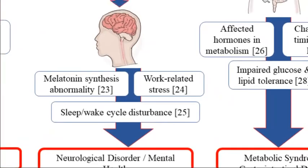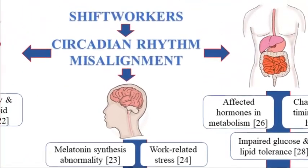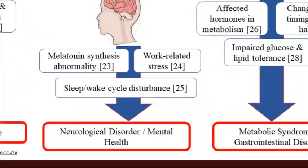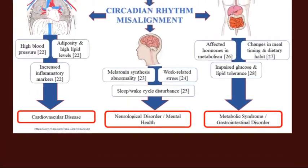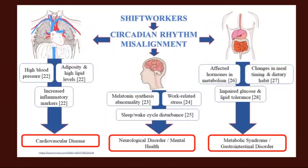The brain is also impacted. Poor circadian rhythm results in melatonin synthesis abnormality, work-related stress, and poor sleep, which leads to neurological disorders including neurodegenerative diseases like Alzheimer's and Parkinson's, as well as poor mental health and depression. This is not some fringe idea — it is backed up by many decades of science: living out of sync with our circadian rhythms results in very poor health outcomes.